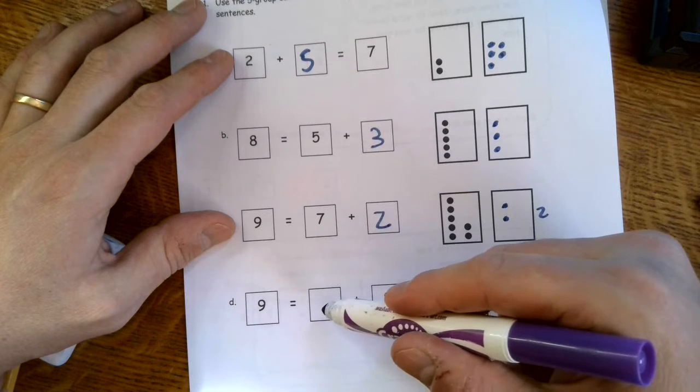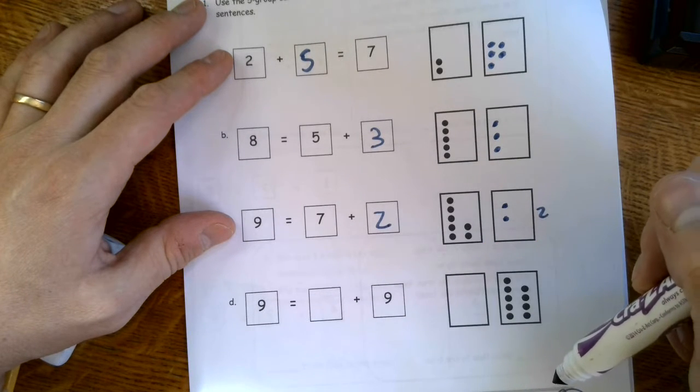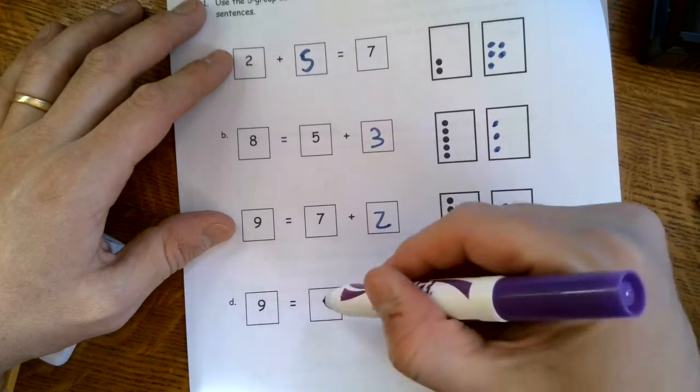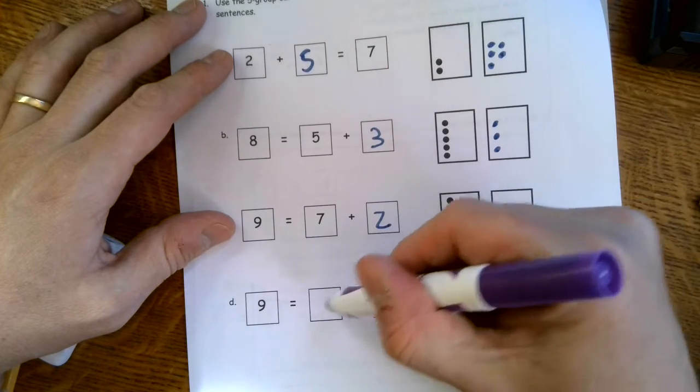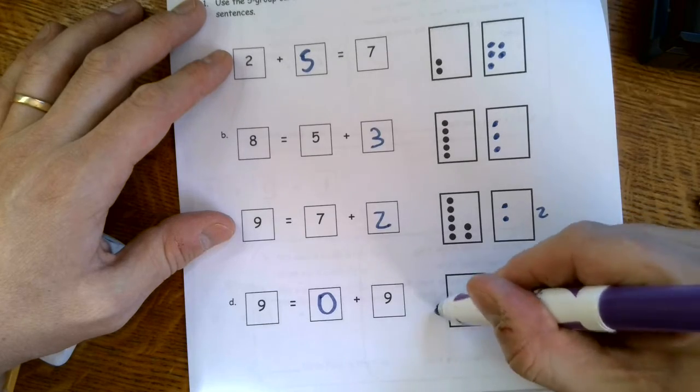Alright, we got one more. Nine equals something plus nine. Wait a second, I know that one. Nine equals nine plus zero. We don't even have to put any in there. It's a zero. Alright, let's do the next page.